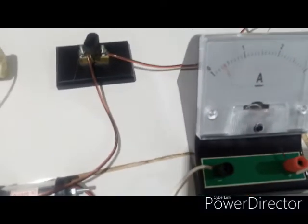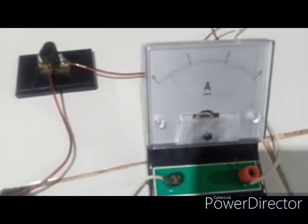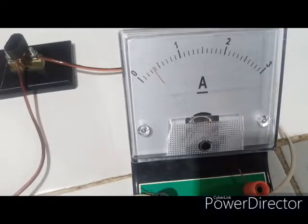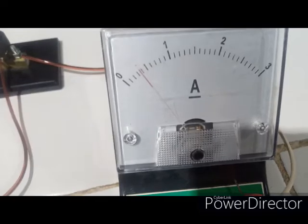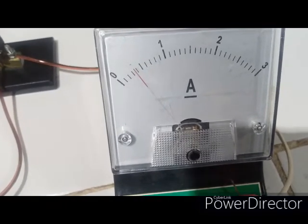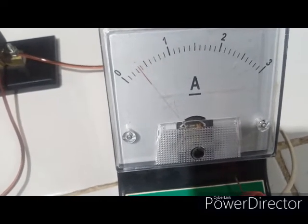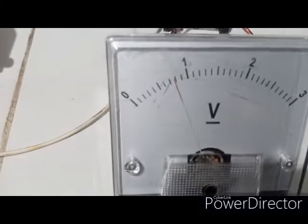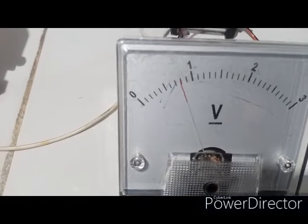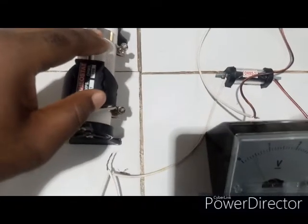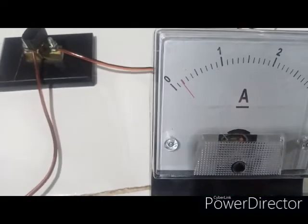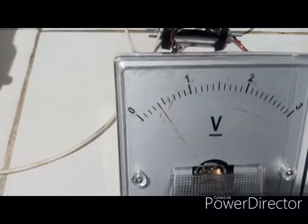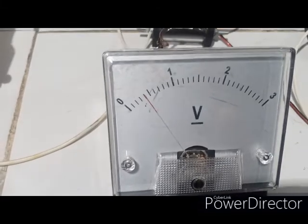Also with a little adjustment on the rheostat, I have my ammeter reading to be 0.37 and then my voltmeter reading is 0.8. And then with another adjustment, I have my ammeter reading to be 0.2 and then my voltmeter reading to be 0.4.